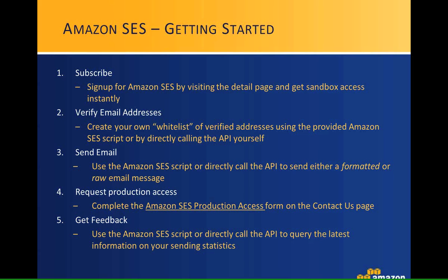Step four: once satisfied with how the sandbox works, request production access. You fill out the Amazon SES production access form found on the Contact Us page on the AWS portal; we review your request and respond usually within one business day. Upon approval, restrictions are lifted — you go from 200 to 1,000 messages, can send to any email address, and can use the Get Feedback API to view bounces, complaints, and delivery counts, partitioned over time.